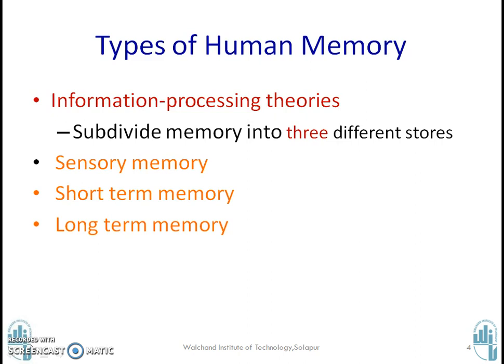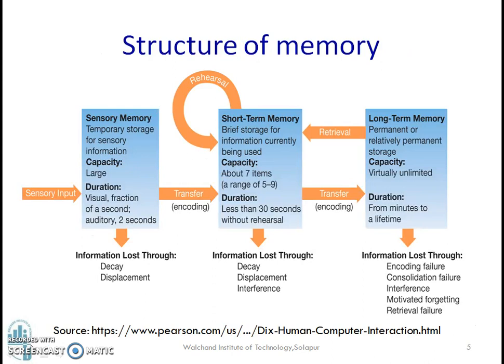Most of us always have a curiosity in our mind — why is it that some people are able to remember things very vividly, like birth dates and anniversaries? In today's session, we will try to link this by exploring each type of memory. This is the typical structure of a memory. It consists of sensory memory, short-term memory, and long-term memory.